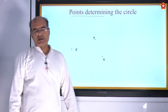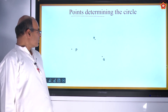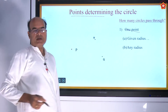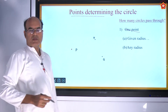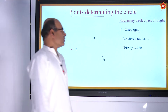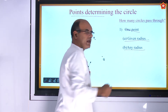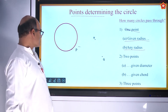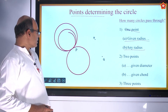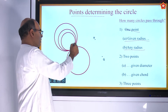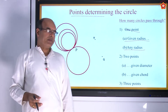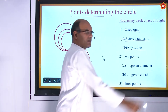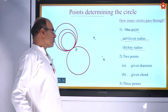Points determining the circle: How many circles pass through one point? With any given point P and any radius, an infinite number of circles can be drawn through it — both with different radii and with the same radius. How many circles pass through two given points? With the two points as endpoints of the diameter, only one circle can be drawn. But if the two points form a chord, infinite circles can be drawn through them.